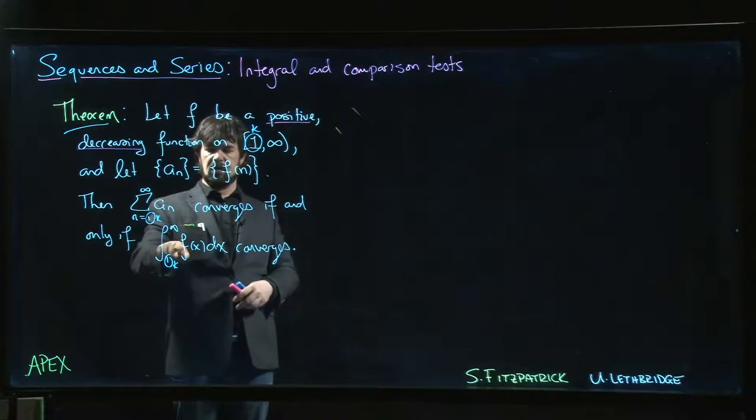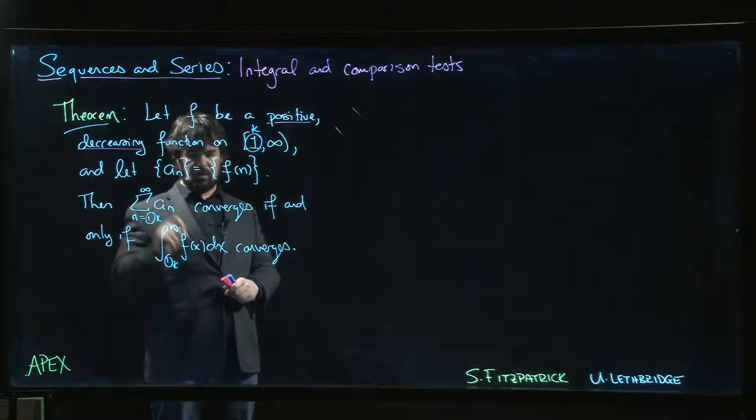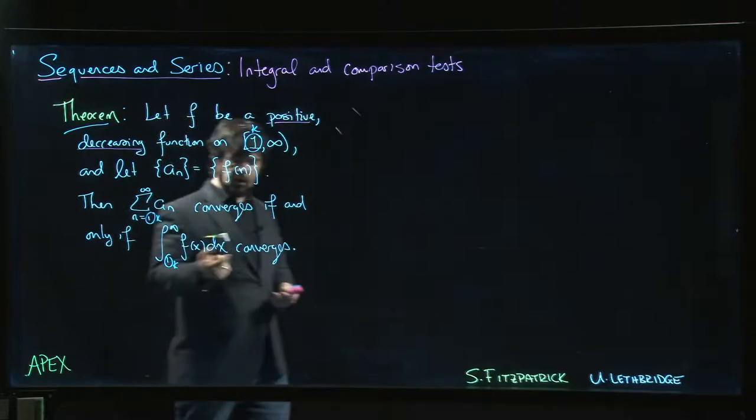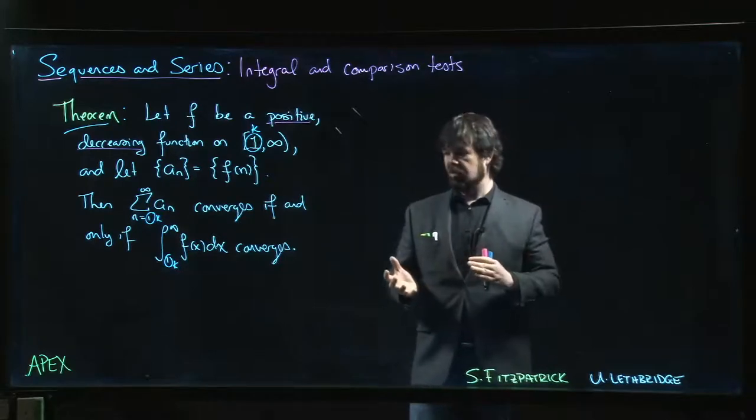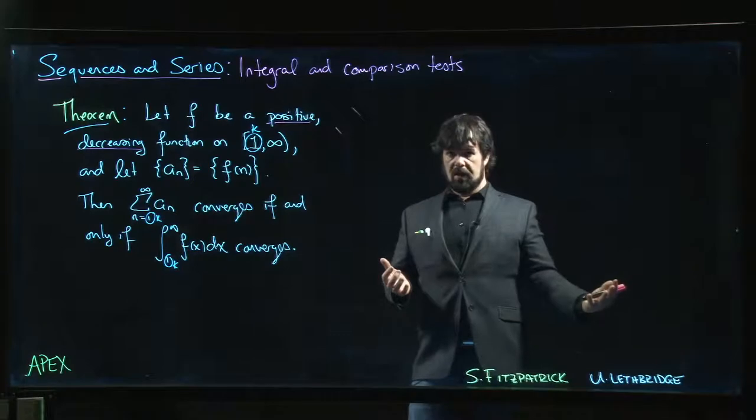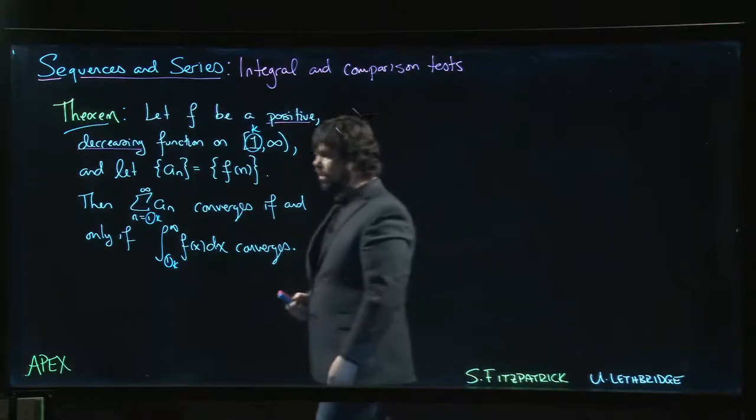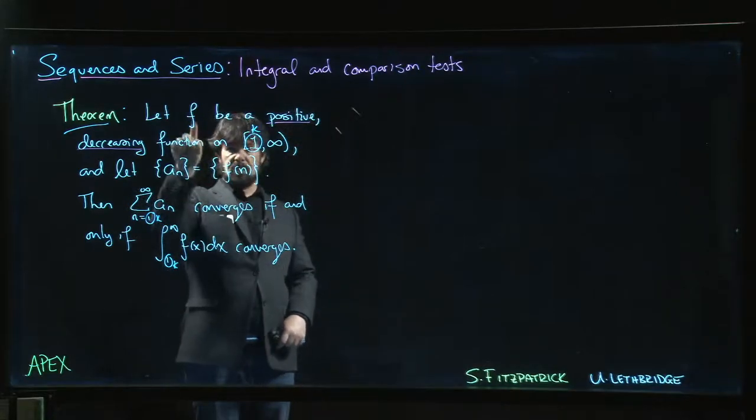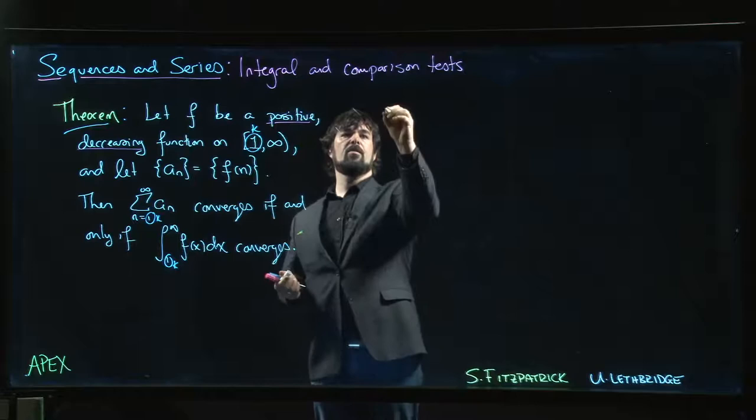The if and only if is saying, well, if this converges so does this. If this converges so does this. Or if you want to put it another way, if this diverges so does this. And the idea here is we already have some practice with improper integrals and figuring out whether or not improper integrals converge or diverge. So anything that we learned about improper integrals and convergence of improper integrals can now be applied to convergence of series as long as we can put our series in this form for the appropriate type of function.